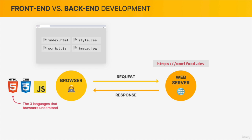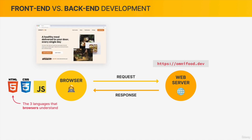HTML, CSS, and JavaScript are precisely the three languages that browsers can understand. All of the code that makes up a website needs to always be written in HTML, CSS, and JavaScript, because these are essentially the three core technologies that any browser can understand. Once the browser receives these files from the server's response, it will take the code and render the website that we were trying to access. And with this, you already have a good understanding of what actually happens when we browse to a website.